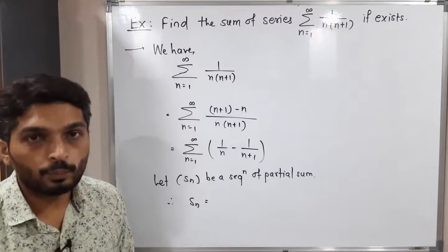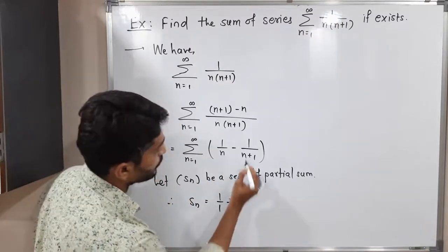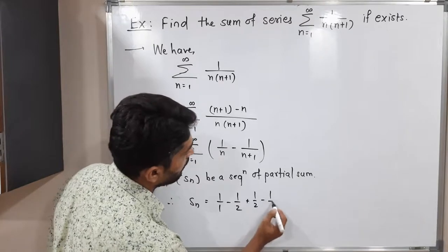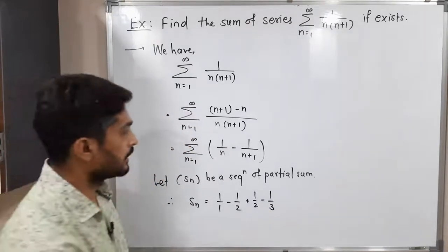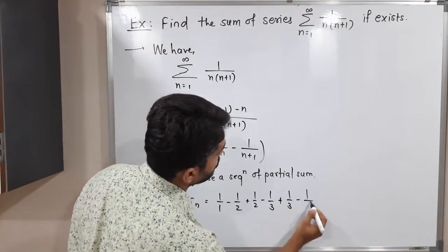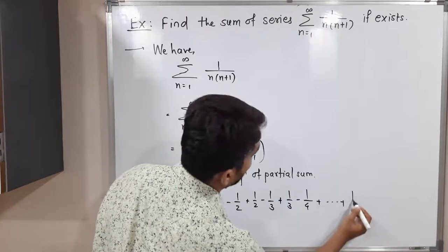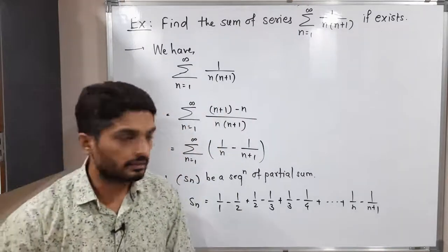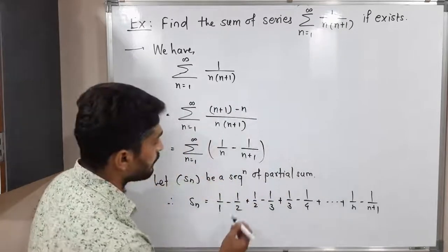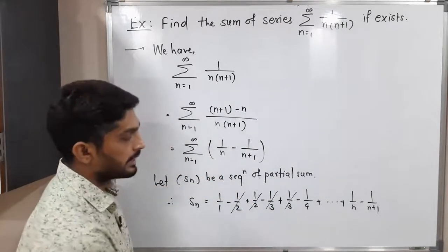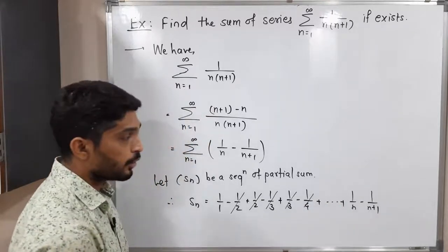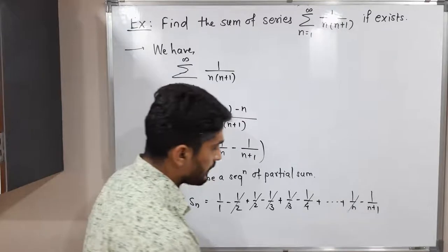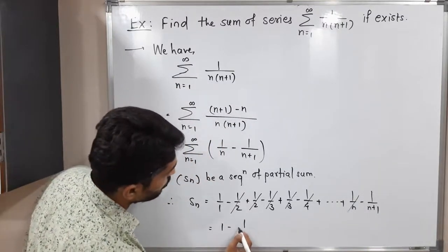If n=1: we get 1/1 minus 1/2. If n=2: 1/2 minus 1/3. If n=3: 1/3 minus 1/4, and so on. The nth term is 1/n minus 1/(n+1). Now all intermediate terms cancel: minus 1/2 and 1/2 cancel, minus 1/3 and 1/3 cancel, minus 1/4 and 1/4 cancel, and so on. All terms cancel except the first and the last, so S_n = 1 minus 1/(n+1).